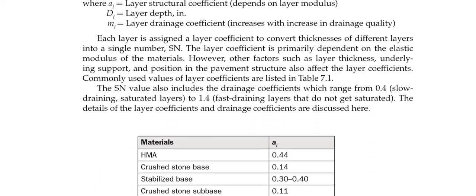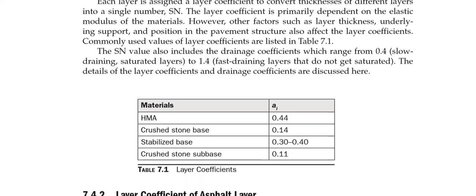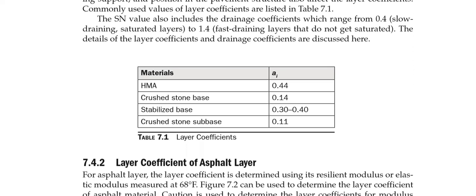Layer coefficients are values on a scale from 0 to 1 indicating the structural contribution of each layer material. Typical values are: HMA (asphalt concrete) 0.44, crushed stone base 0.14, stabilized base (with cement or lime added) 0.3 to 0.4, and subbase 0.11.